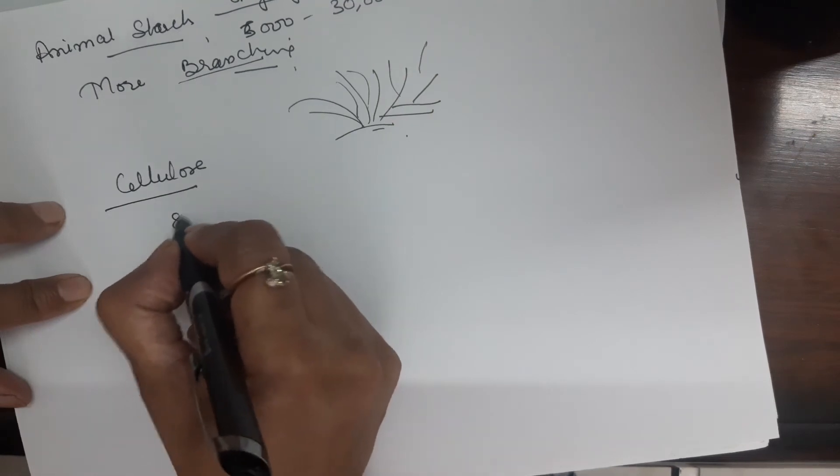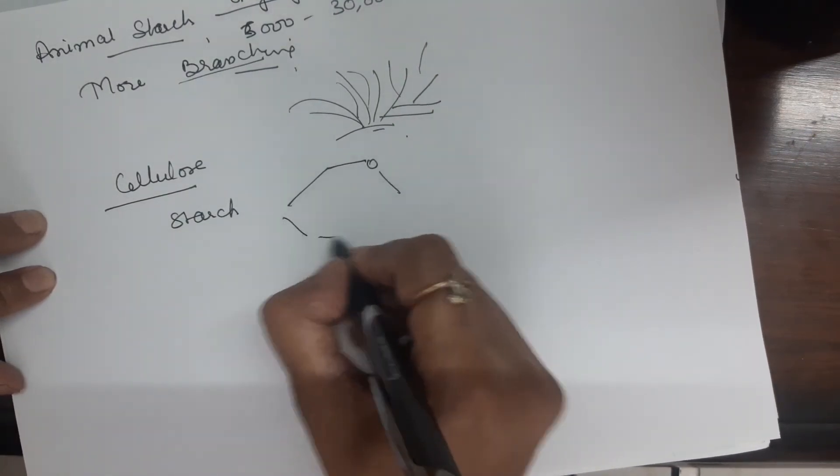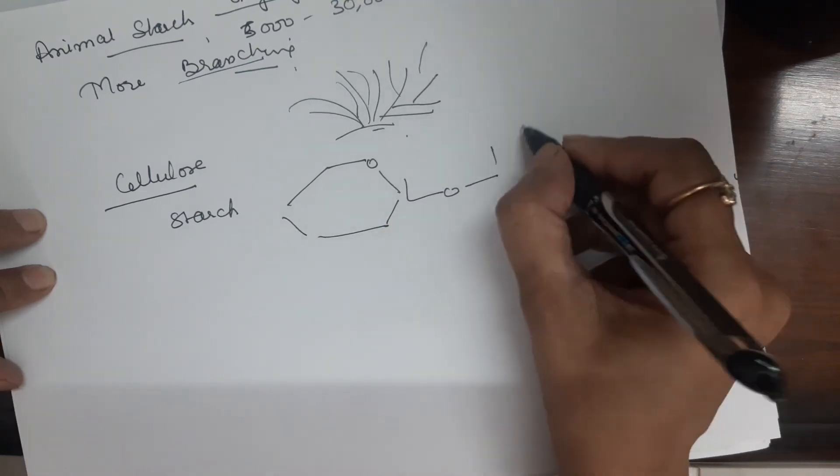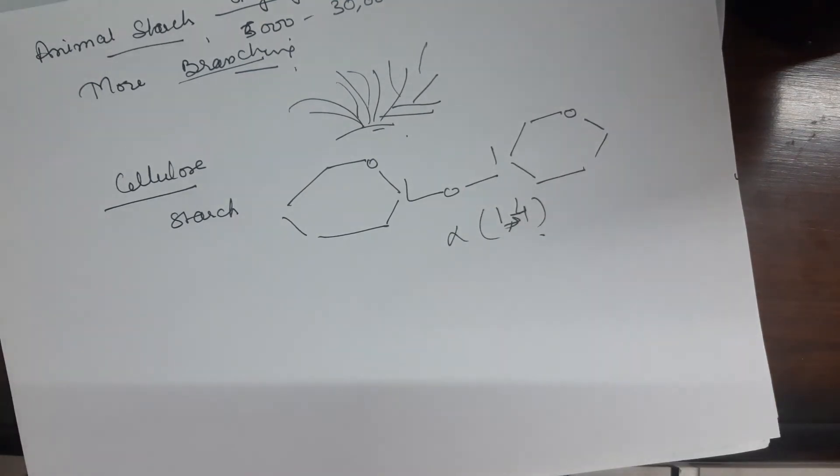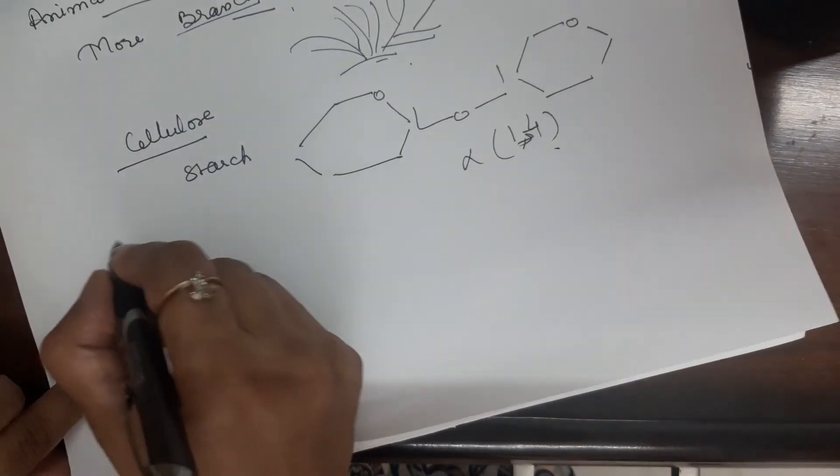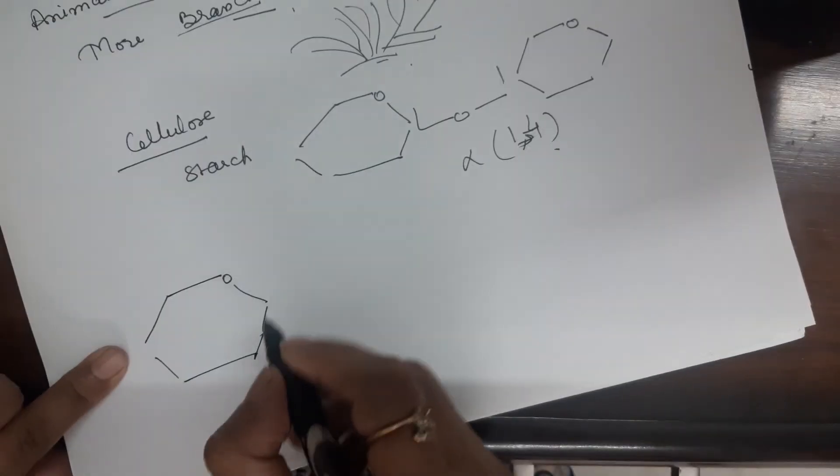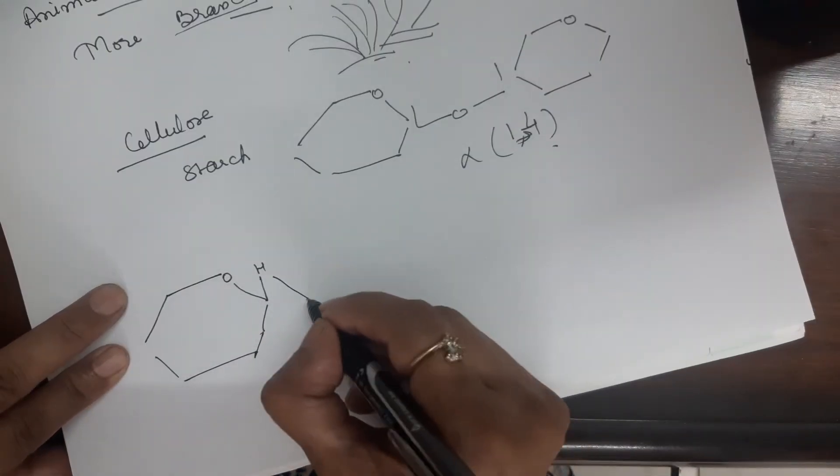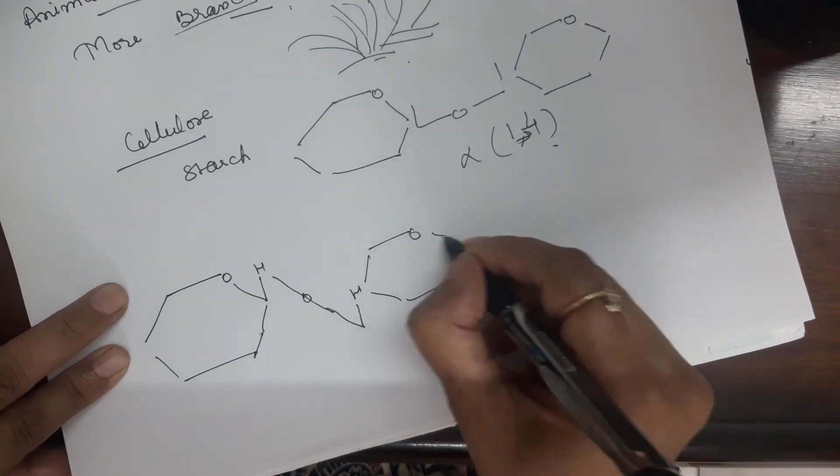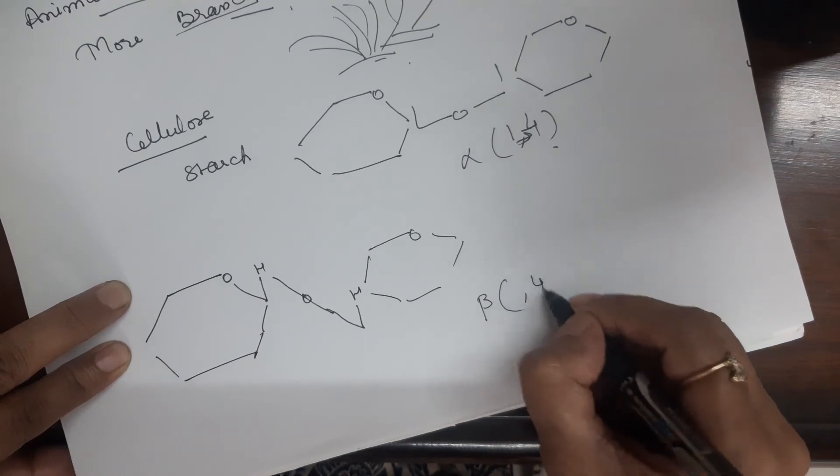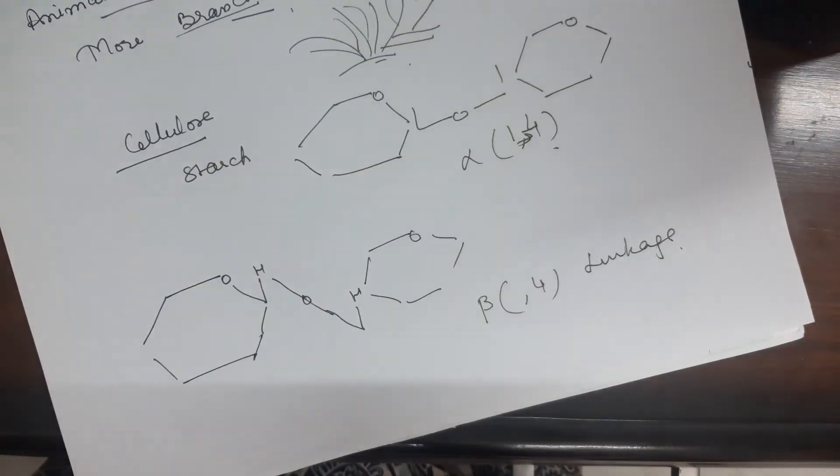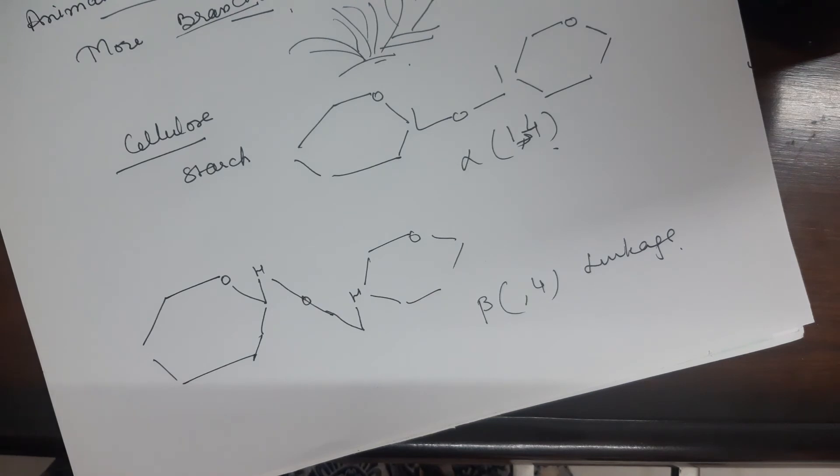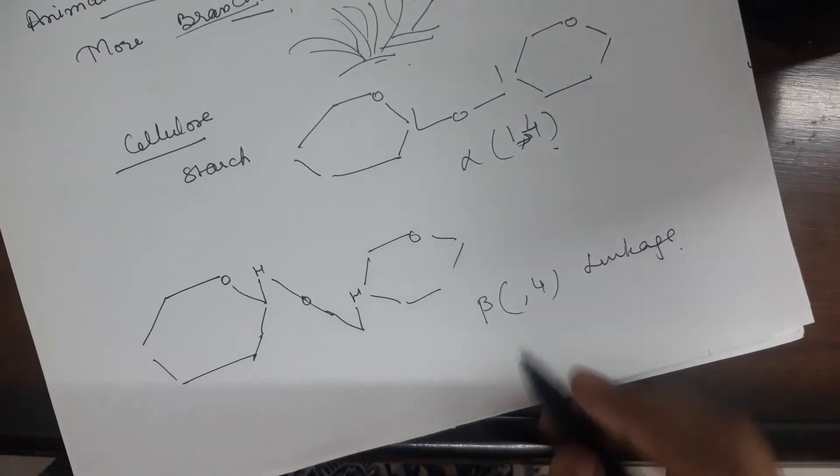The difference is in the type of bonding. In case of starch, there is one four alpha linkage. But in case of cellulose, there is one four beta linkage. This is the difference between cellulose and starch. In starch, alpha one four linkage. And in cellulose, beta one four linkage.